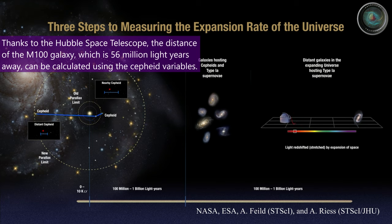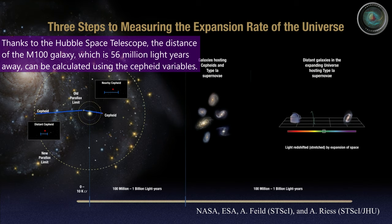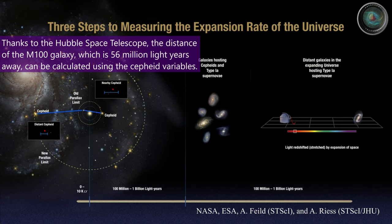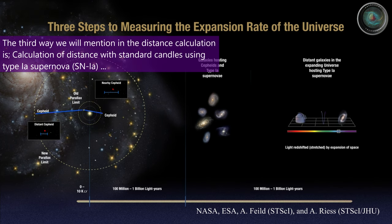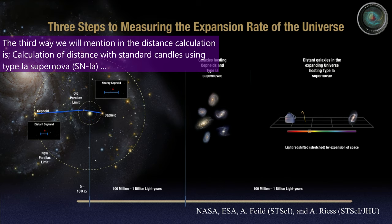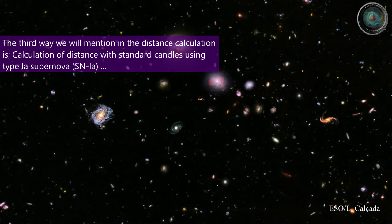Thanks to the Hubble Space Telescope, the distance of the M100 galaxy, which is 56 million light-years away, can be calculated using the Cepheid variables. The third way we will mention in the distance calculation is the calculation of distance with standard candles using Type 1A supernova, SN1A.